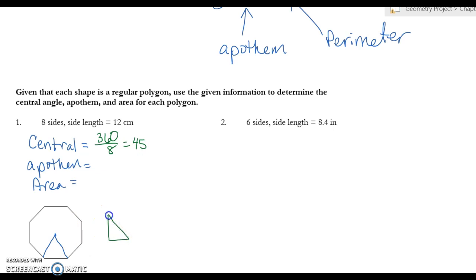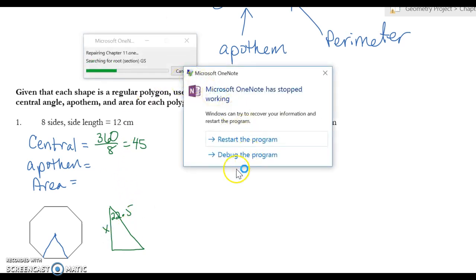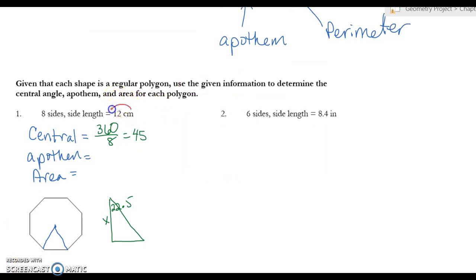Now to find the apothem, I'm going to draw my right triangle, and I know that this is 22.5. Now it tells us the side measure is 12, but over here I just took half of this triangle, so this is 6. And so we have to use our SOH CAH TOA. This is my angle, so I circle my angle, I label my sides—this is opposite and this is adjacent.